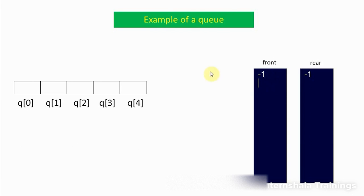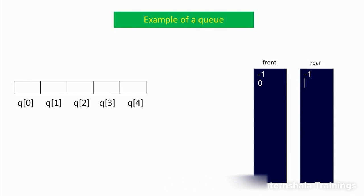Now I want to insert an element. Since there is not even a single element in the queue, when inserting the very first element, we increment both front and rear by one. So front becomes 0 and rear also becomes 0. Now I insert the value — suppose 100 — at queue[0].